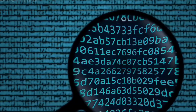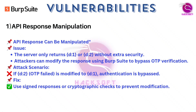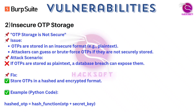Now let's walk through the vulnerabilities that were present on this website. First, API response manipulation is possible — the server returns simple response flags like D colon 1 and D colon 2 without extra integrity checks. If responses aren't cryptographically protected, they can be tampered with or spoofed. The fix: use signed responses or cryptographic integrity checks so responses can't be altered in transit.